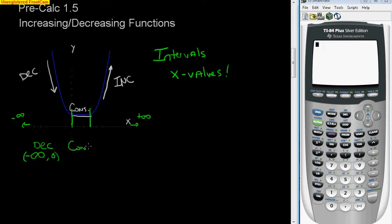We are constant between 0, 1, 2, 3. Between 0 and 3, this graph is constant. And then from 3 off to infinity, we are increasing. And as you can tell, these are x values that we have right here.